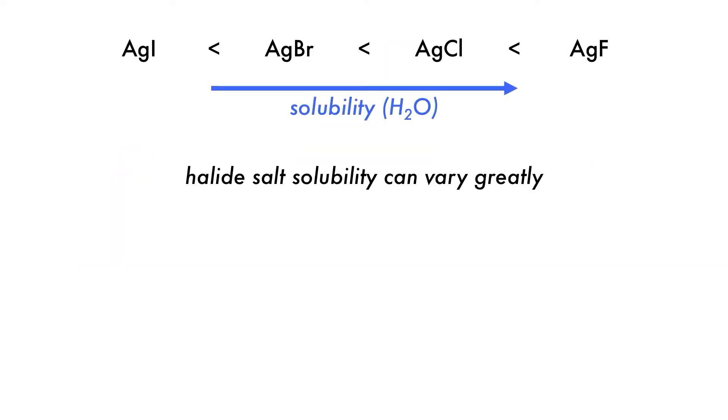In chemistry, we are often faced with somewhat contradictory or divergent trends. One example is the water solubility of various halide salts. Silver fluoride, for example, is much more soluble than silver chloride, with solubility decreasing going down the group.